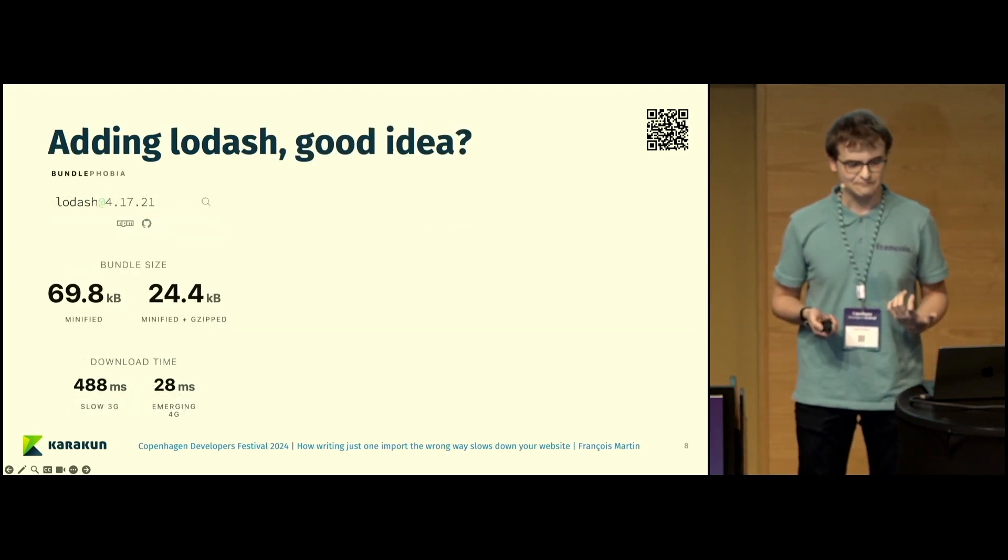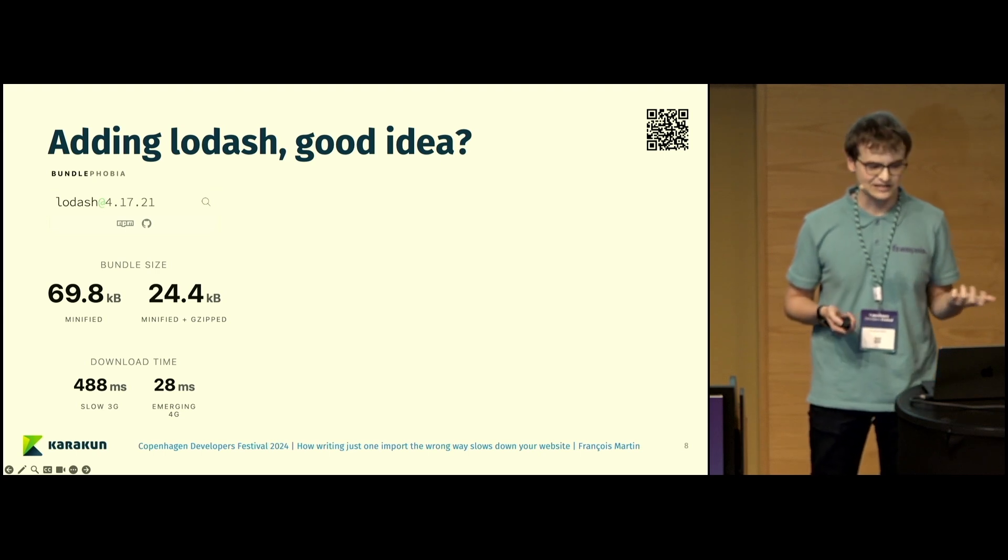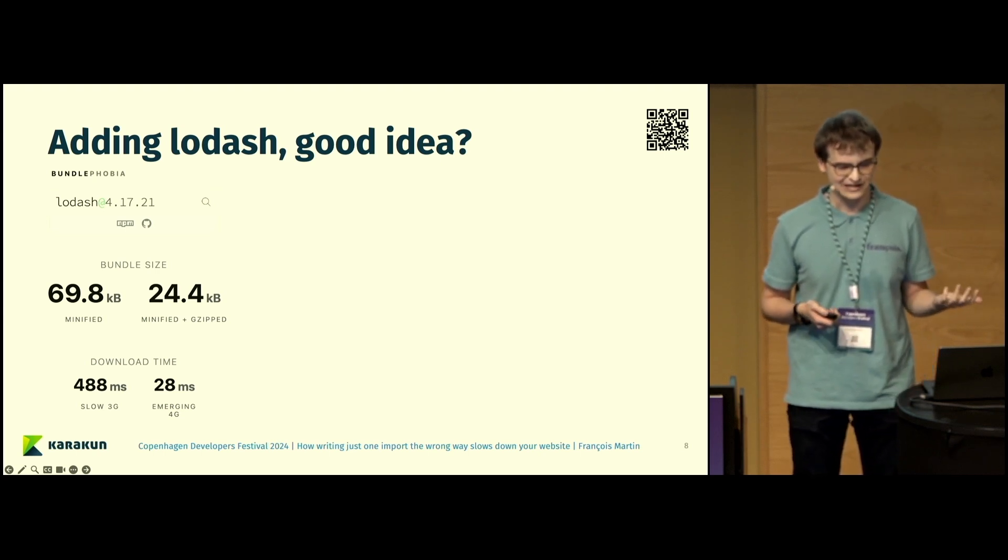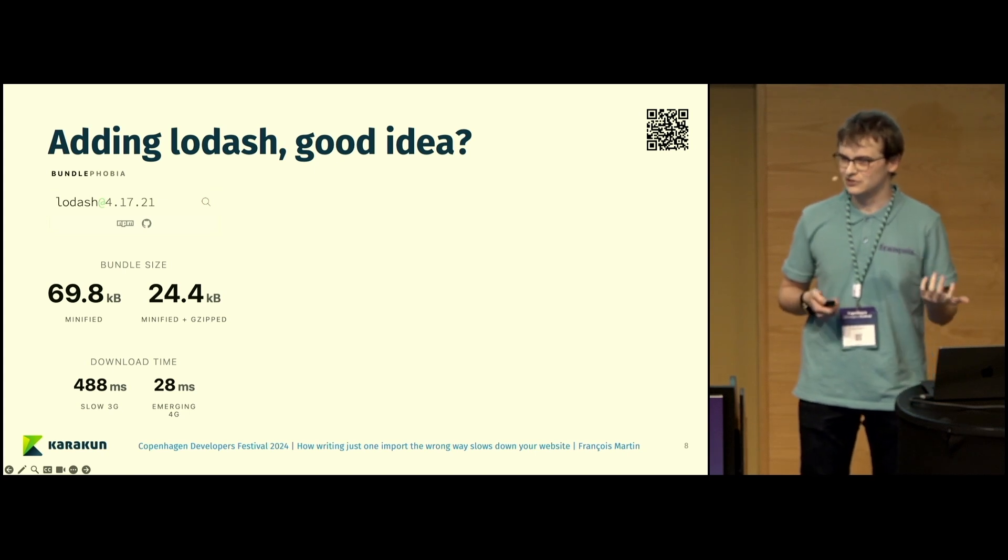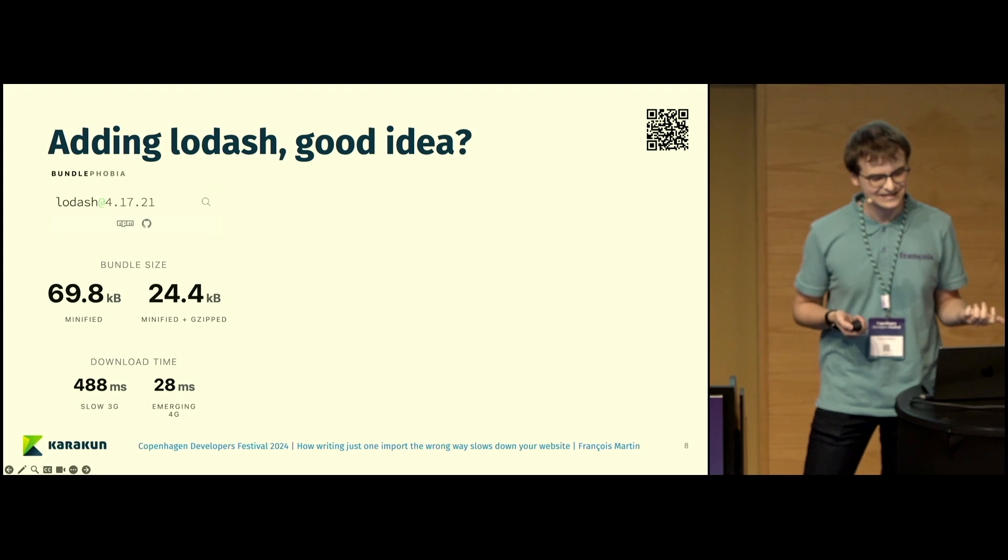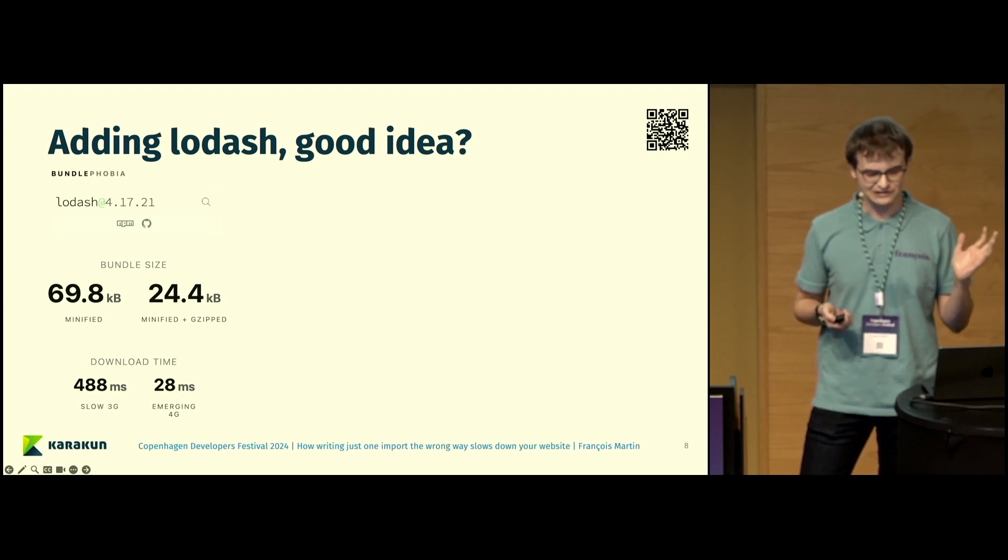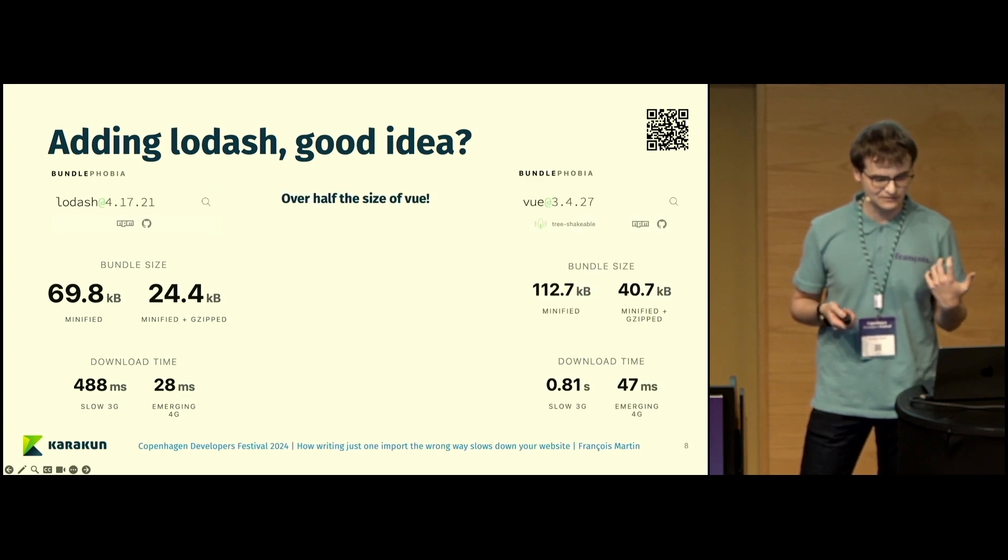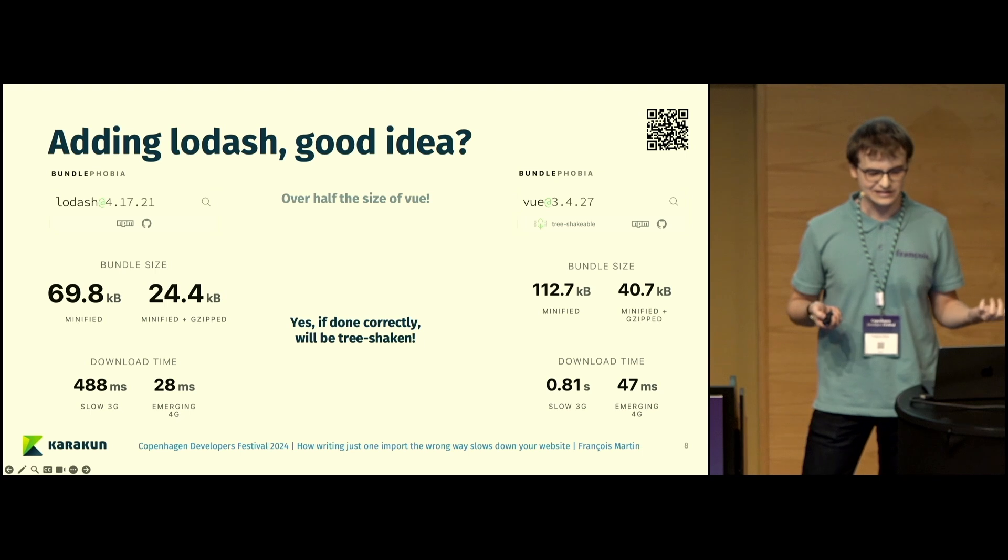If we look at, for example, is it a good idea to add the dependency Lodash? You can see on the left side it is quite big. Now that we know what tree-shaking is, is it a good idea to add it? In theory, probably yes. Also, by the way, the screenshot is from Bundlephobia. If you're interested, you can check it out. It's a website that's quite useful to know how big a dependency is. If we look at Vue, for example, Lodash is about half the size of Vue. Lodash is really quite big, so we need to take this into consideration. But of course, as you've seen earlier, if you do it correctly, then yes, it should be tree-shaking, so it should be fine.